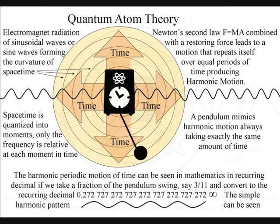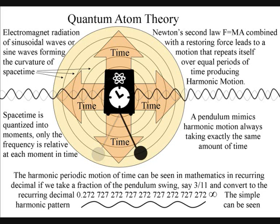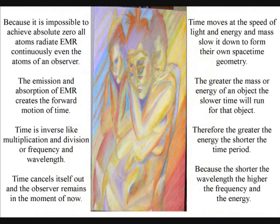it is by measuring electromagnetic radiation in the form of microwaves. Even a traditional pendulum clock will mimic the motion of electromagnetic radiation, keeping perfect time. Because it is impossible to achieve absolute zero, all atoms radiate electromagnetic radiation continuously.